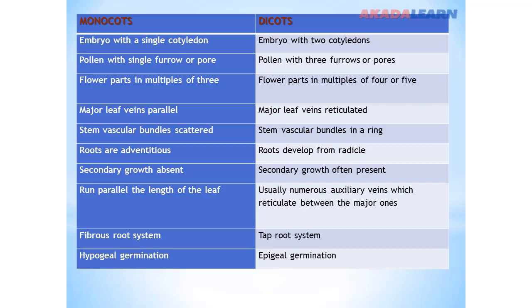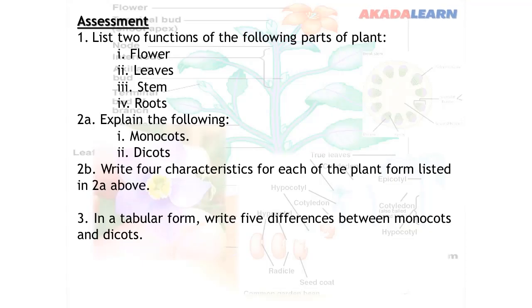To differentiate between monocots and dicots, go back and study their characteristics — that will help you get a better understanding. Assessment: list two functions of each of the following parts of plants: flower, leaves, stem, and roots. Then explain monocots and dicots, and write four characteristics for each. Finally, in tabular form, write five differences between monocots and dicots. If you find this difficult to answer, go over the video again — you will be able to answer it.